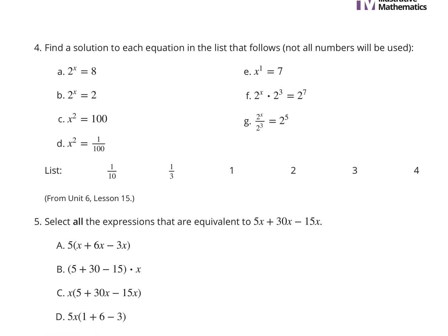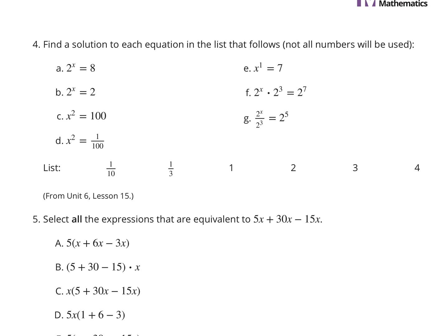Continuing on — find a solution to each equation in the list that follows; not all numbers will be used. For 2 to the x equals 8, we're looking for how many times we multiply 2 to get to 8. 2 to the first is 2; 2 to the second is 4; multiply by 2 again and you get 8, so 2 to the third equals 8, meaning x equals 3. For 2 to the x equals 2, 2 to the first power is 2, so x equals 1.